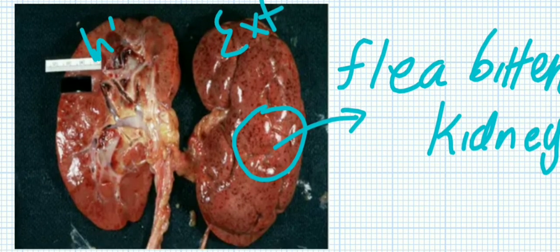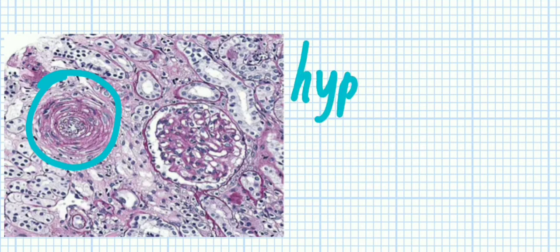When you look at the histology, you can see something that looks like an onion. That is actually hyperplastic arterioles - that is the histology of malignant hypertension.